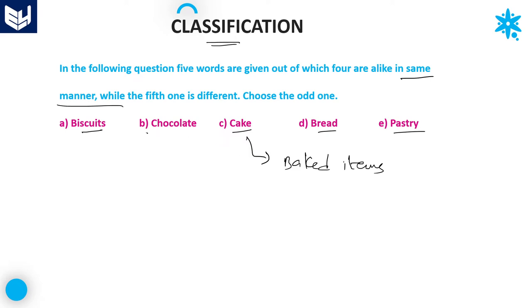But coming to chocolate, that is not a baked item. That is the reason why our answer is chocolate — it is not following the same logic as that of the remaining four. Chocolate is the odd one, which is Option B. Option B is the right answer for this question.